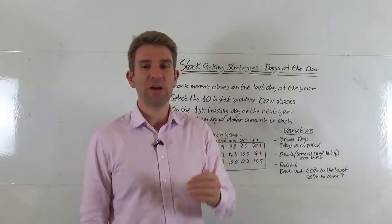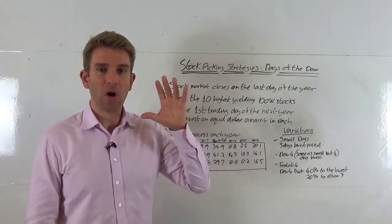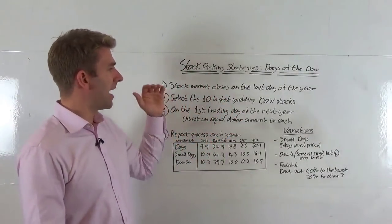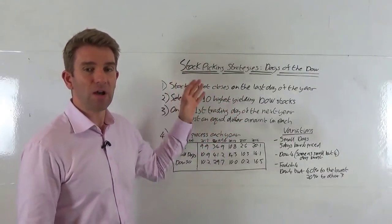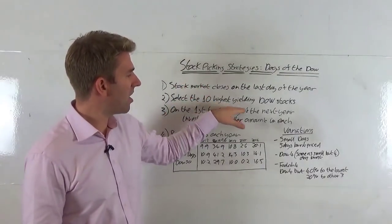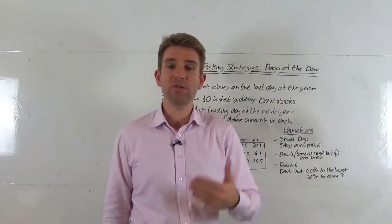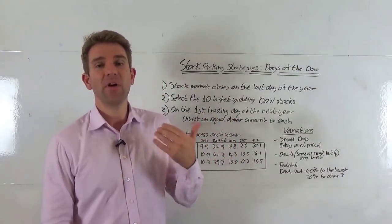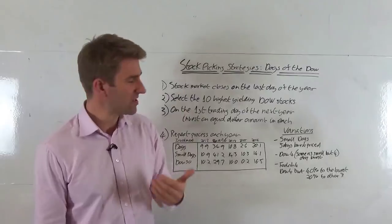So the Dow Jones Industrial Average is built up of 30 stocks, got 30 constituents or components. And what we do on the last day of the year, we select the 10 highest yielding Dow stocks. In other words, it's the 10 stocks in the Dow 30 that pay the highest dividend yield expressed as a percentage.